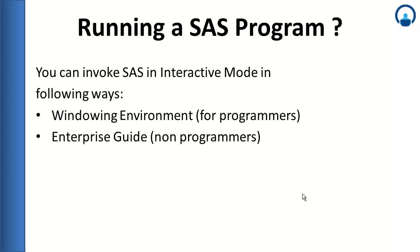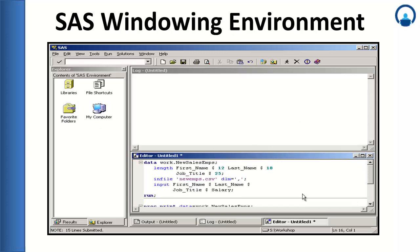For example, there is a SAS developer who writes a piece of code in the windowing environment to generate a particular report. The same report can be generated by a manager in an organization who does not have any knowledge about SAS programming — they can use this point-and-click application, which is Enterprise Guide, and generate the same report. This is the first look of the SAS windowing environment, which is the very first window you would see when you open the SAS program. We shall talk about the interface in detail a little later.